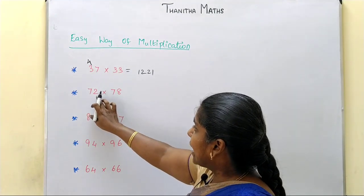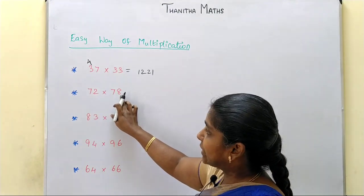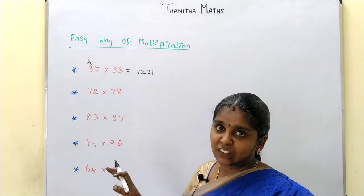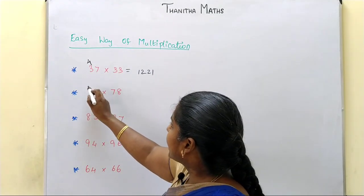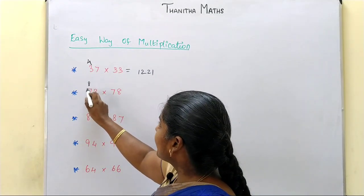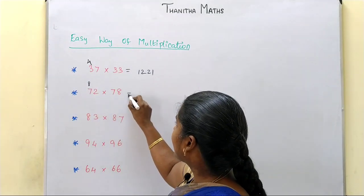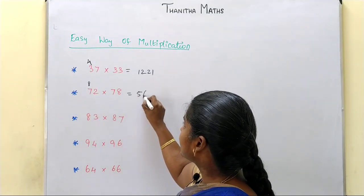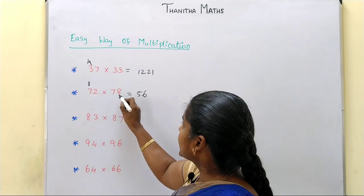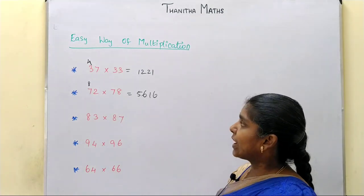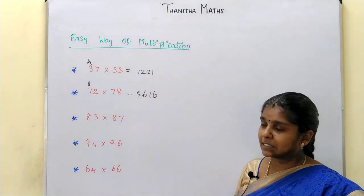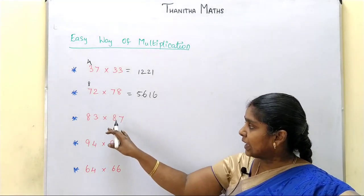The same digits sum to 10, so the conditions are satisfied. The number 7 is 8. 7×8 is 56. 2×8 is 16. So 56 and 16 — that's the answer for 72 and 78.